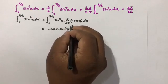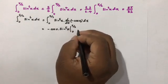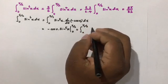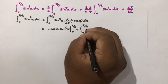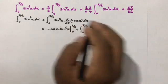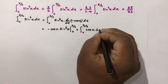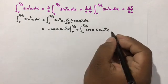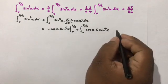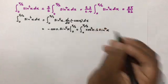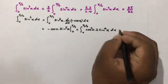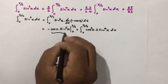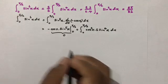Evaluating −cos(x)·sin⁵(x) from 0 to π/2 gives 0. Then we have plus the integral from 0 to π/2 of cos(x) times the derivative of sin⁵(x), which by the chain rule is 5·sin⁴(x)·cos(x), giving us 5·sin⁴(x)·cos²(x) dx.